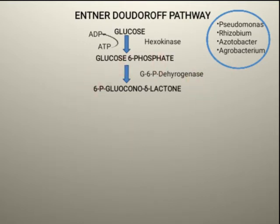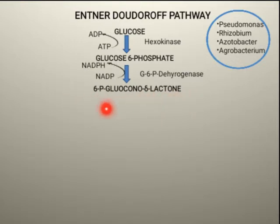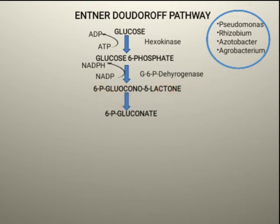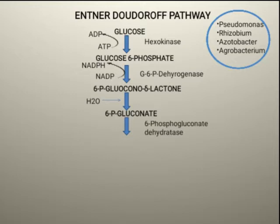The hydrogen removed from glucose-6-phosphate is transferred to NADP⁺, converting it to NADPH. The product 6-phosphogluconolactone is then converted into 6-phosphogluconate by the enzyme 6-phosphogluconate dehydratase, which carries out a water removal step.